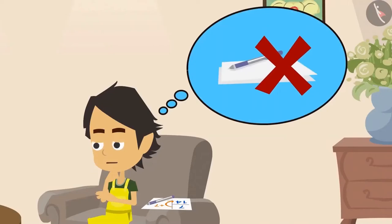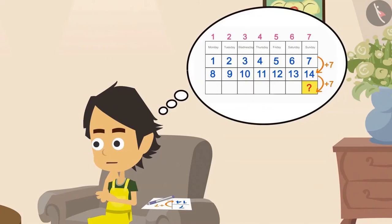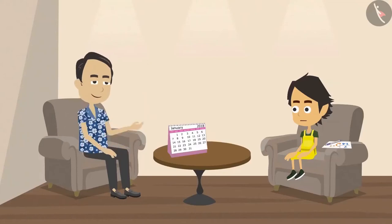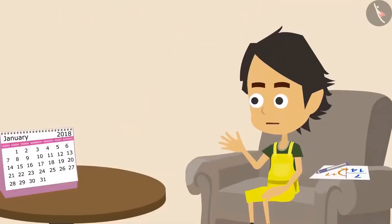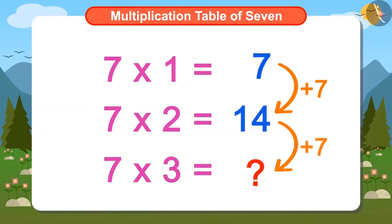Papa asked why Ayushman was unable to answer. Ayushman explained that the first Sunday is 7×1, that is 7th. The second Sunday is 7×2, that is 14th. So the third Sunday's date will be 7×3. But I do not know the multiplication table of 7. So without paper and pen, I cannot answer this question.